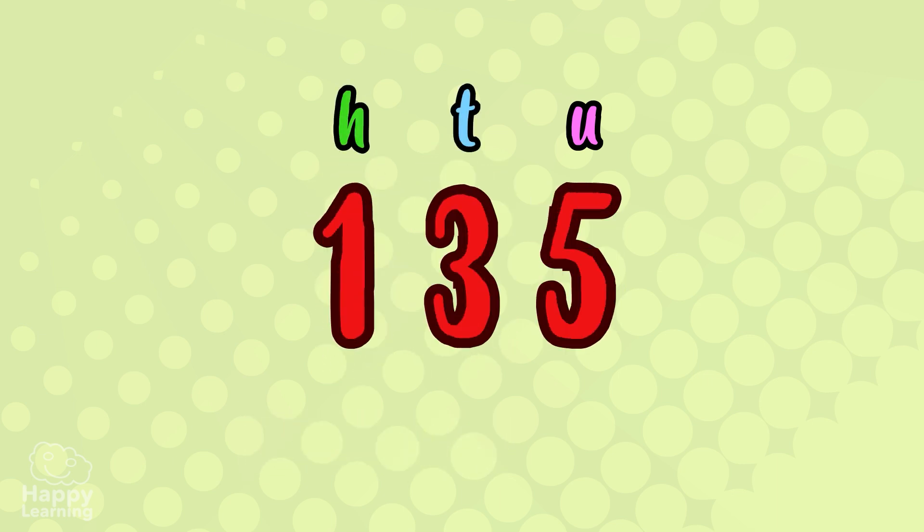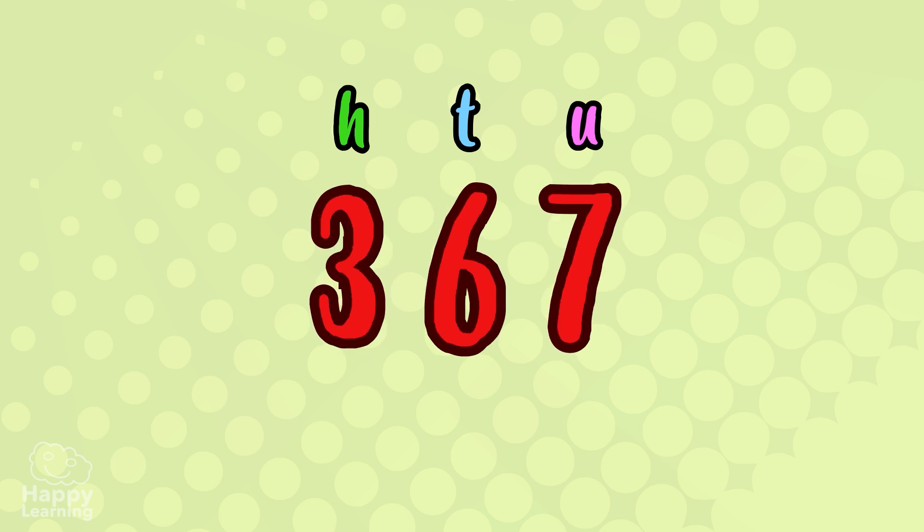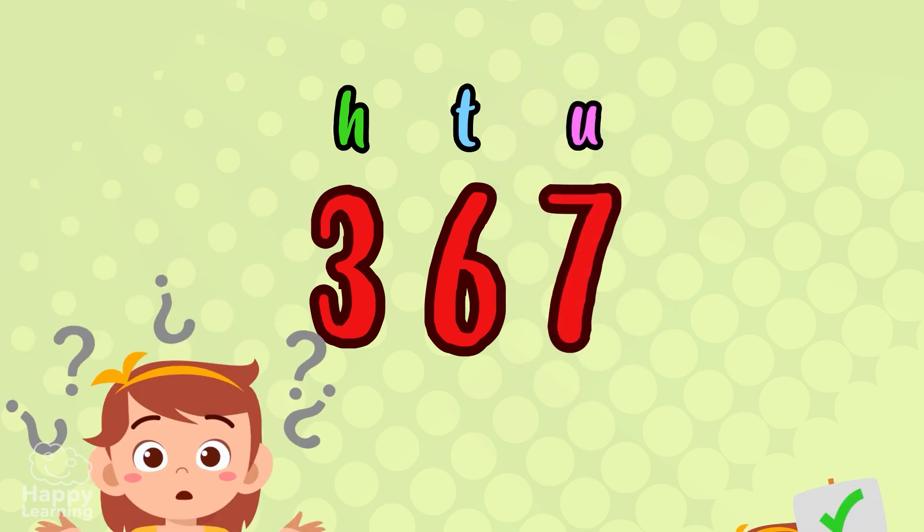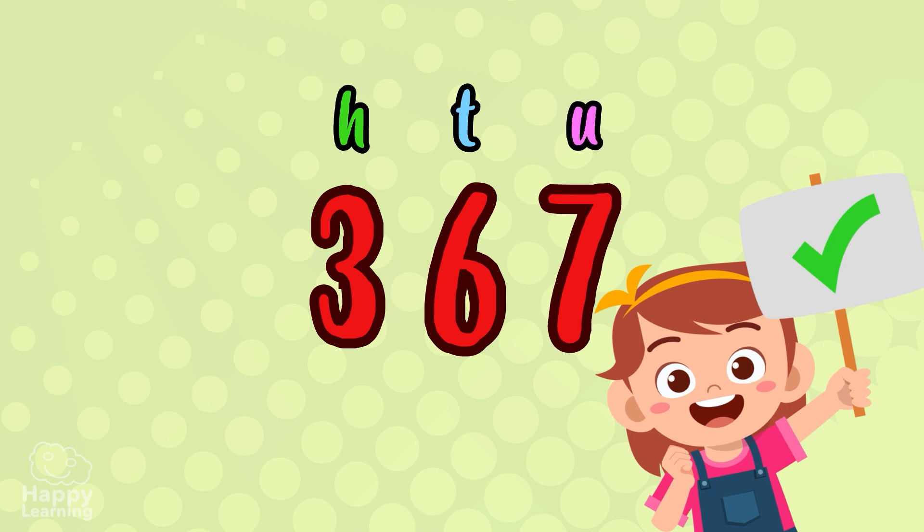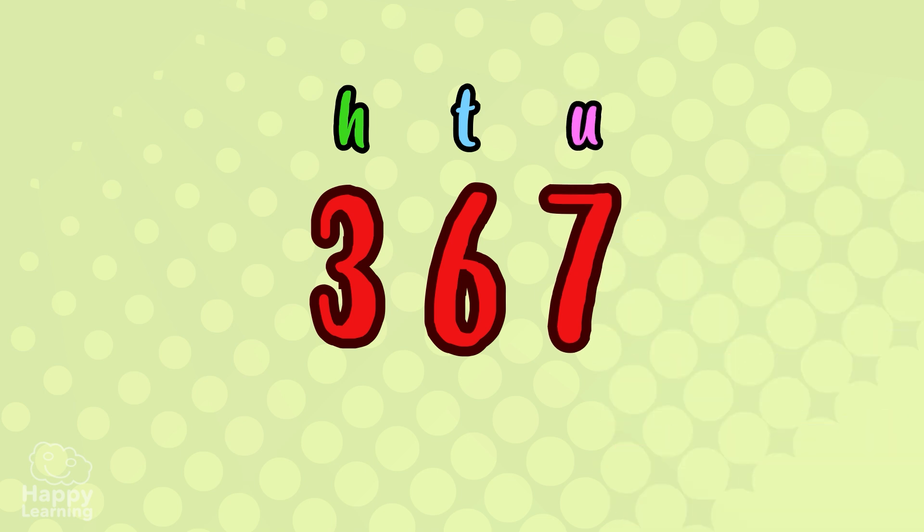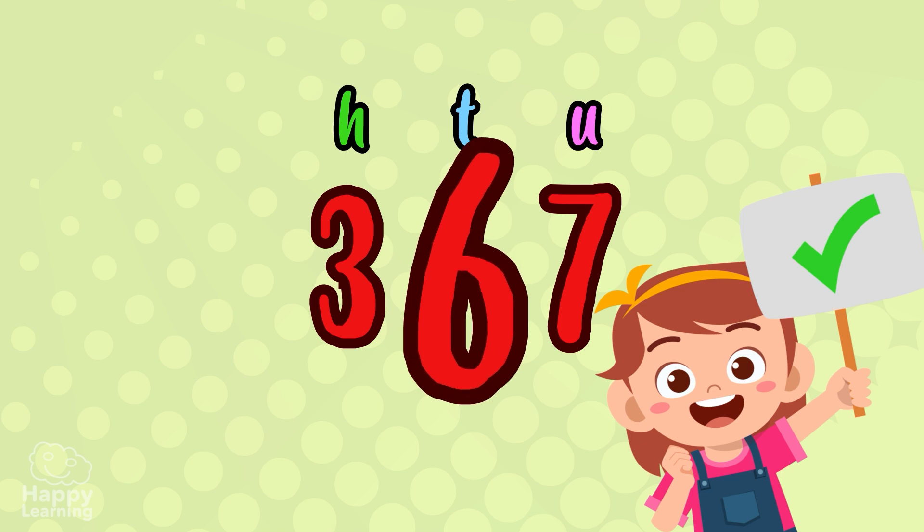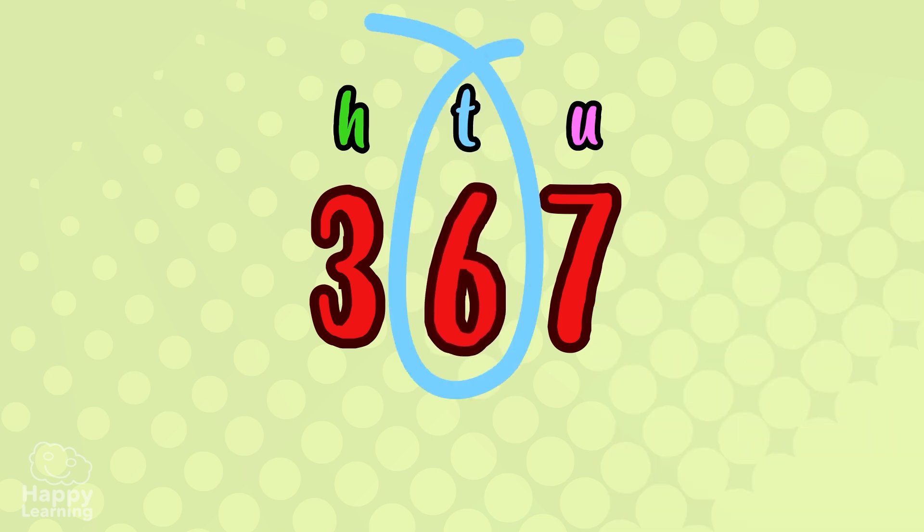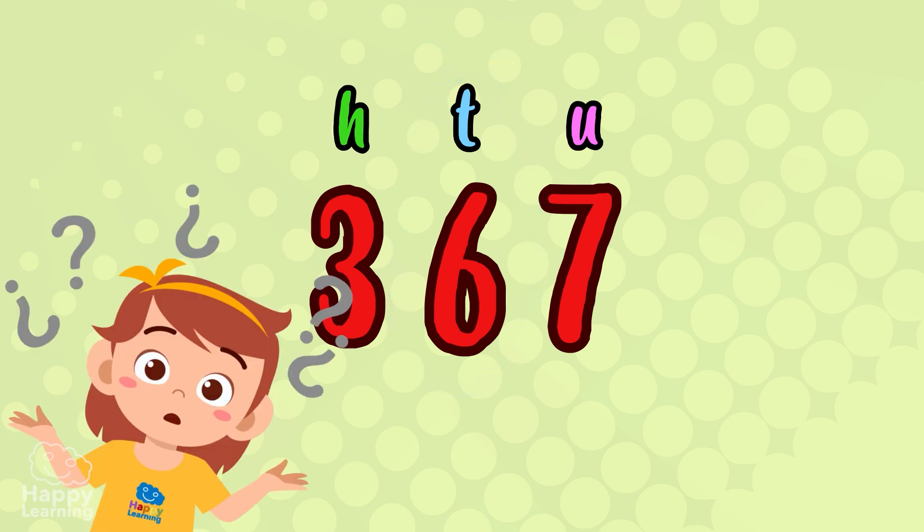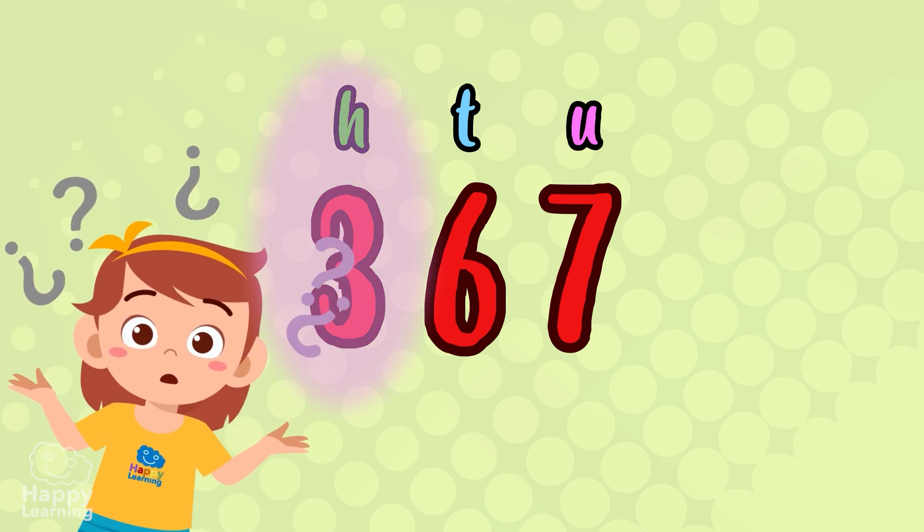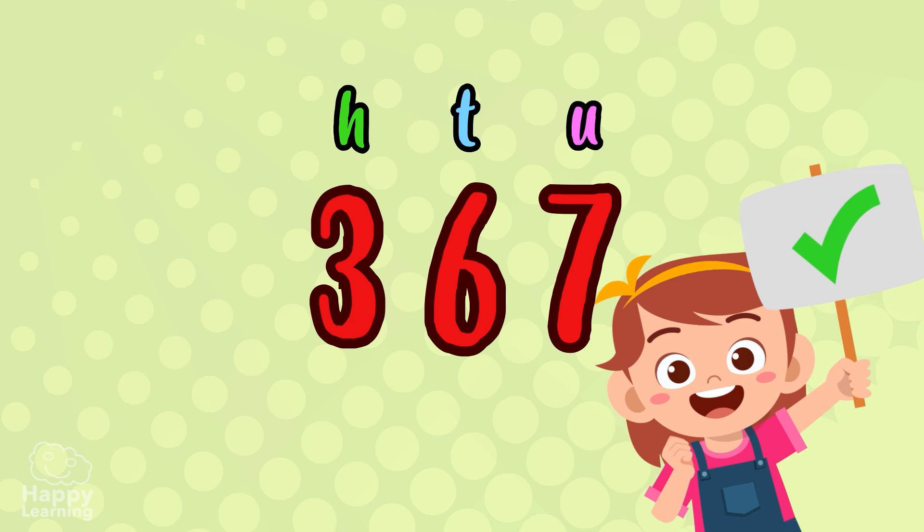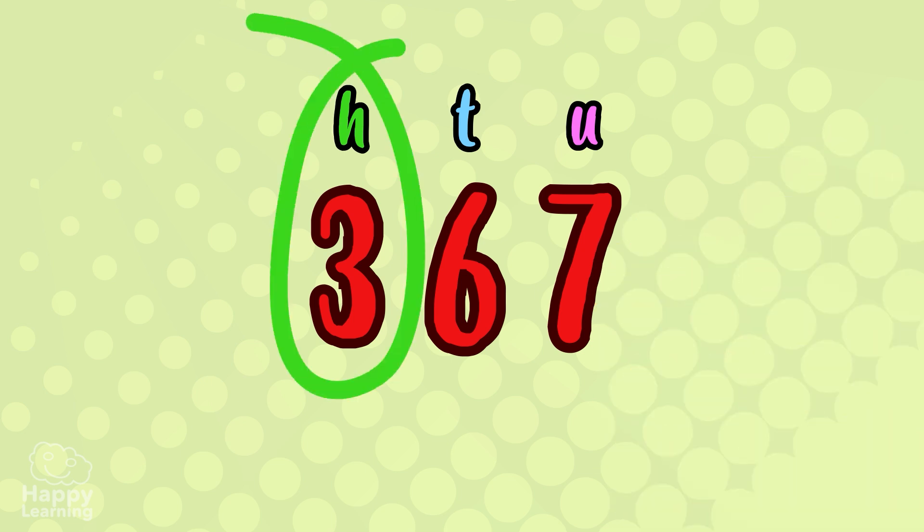Let's try with some other numbers. 367. Now it's your turn. How many units do you think there are? Very good, there are seven units. The units are written in the first position counting from the right. How many tens are there? Yes, very good, there are six tens. The tens are written in the second position counting from the right. And thirdly, how many hundreds do you see? Exactly, three hundreds. The hundreds are written in the third position counting from the right.